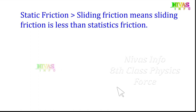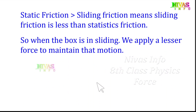Static friction is greater than sliding friction. This means sliding friction is less than static friction. So, once the box is in motion, we need less force because sliding friction is smaller than static friction. That is why, when the box is sliding, we apply a lesser force to maintain that motion.